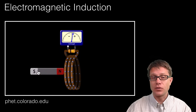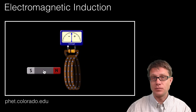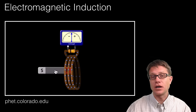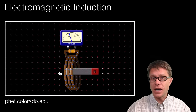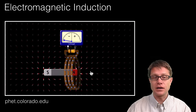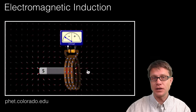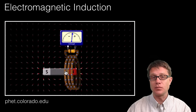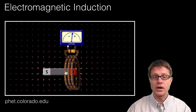If I increase the number of wires I can increase how much I am deflecting that needle — how much current I am actually moving inside the wire itself. The magnetic field lines are changing, and as they change we are getting a change in magnetic flux, and so we are getting current inside the wire.